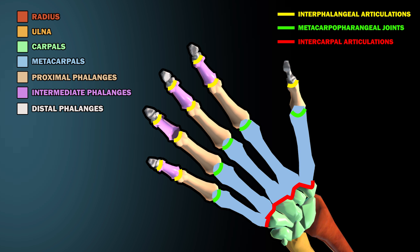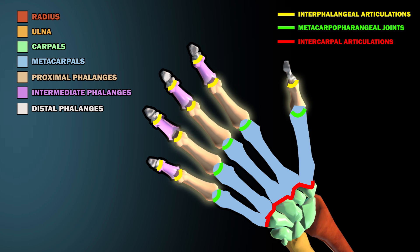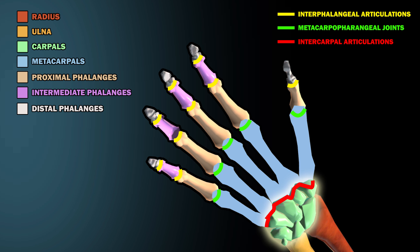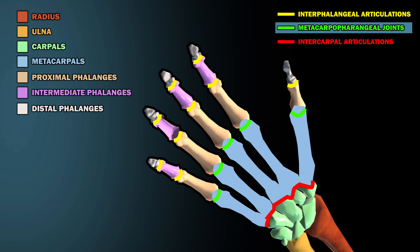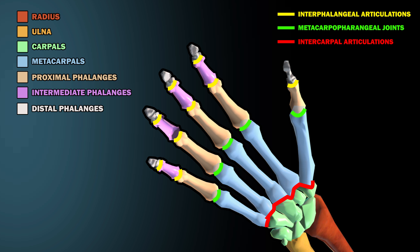Five metacarpals run from the proximal phalanges to the carpal, or wrist bones. Where the metacarpals meet the proximal phalanges, you have the metacarpophalangeal joints. If you think that's a mouthful, just call them your knuckles.